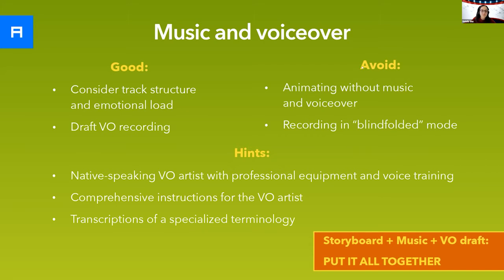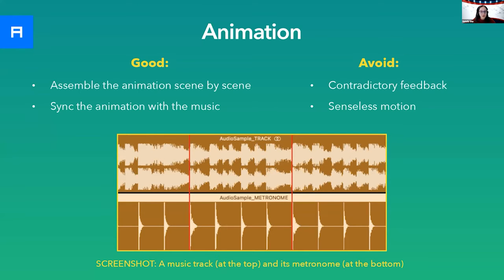When the music is selected and the professional voiceover is recorded, it's time to move to the animation stage finally. This is where you become focused on motion design. To simplify the production process and make it more swift, try assembling the video scene by scene — animate one or two scenes and evaluate the intermediate result. Remember that your team might have their say as well, and if you encounter mutually exclusive ideas, your task will be to reconcile different points of view, structure your team's comments, and provide the motion design team with consistent and coherent feedback.